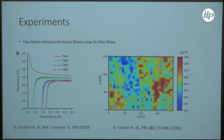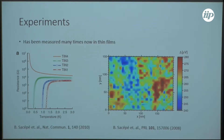The superconductor-insulator transition is well-established experimentally. We see here some experiments done on titanium nitride. We have four samples which have a different sheet resistance — they vary the thickness of the sheets, and this leads to a different sheet resistance. This fourth sample here is the highest resistance, and we see as the temperature is lowered towards zero, the resistance goes to infinity, whereas for the others with lower resistance, it goes to zero. So there is some critical disorder.